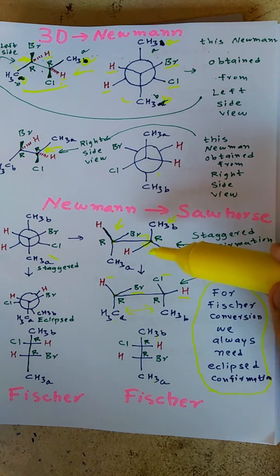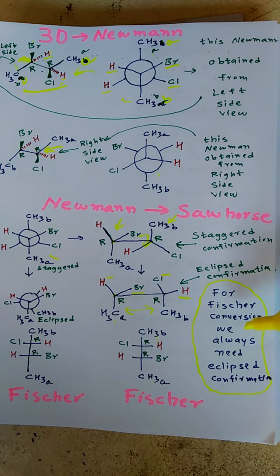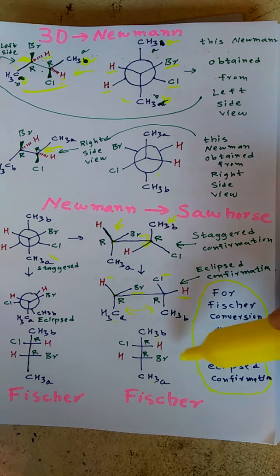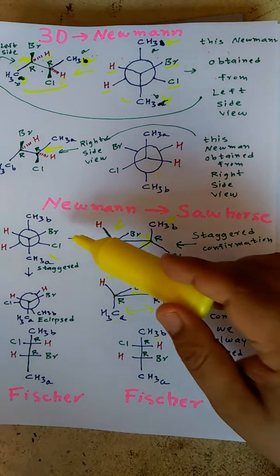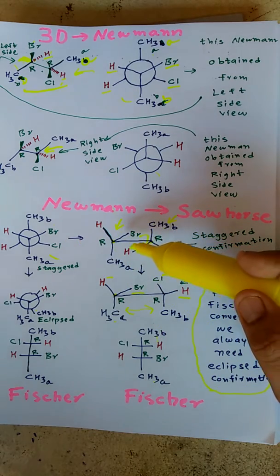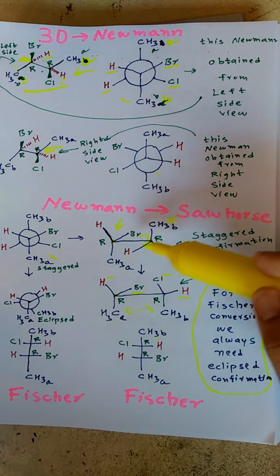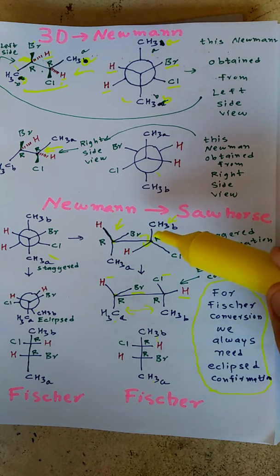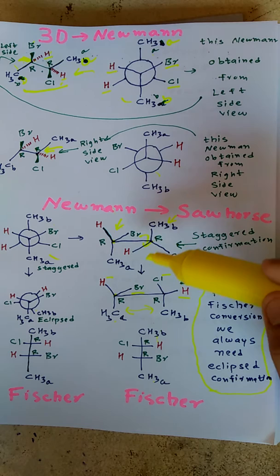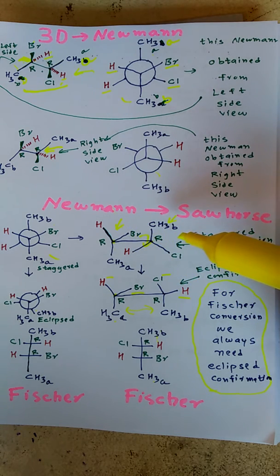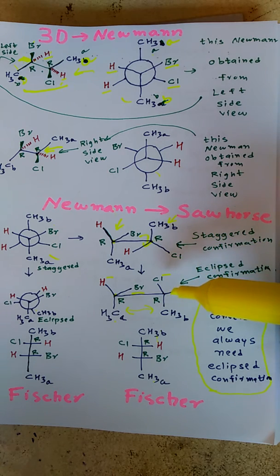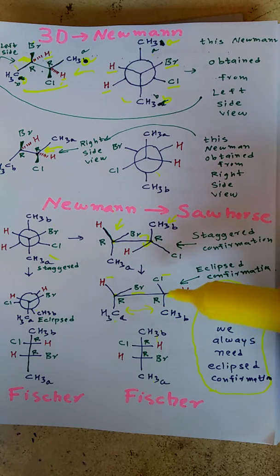To draw the Fischer projection formula, we must always consider the eclipsed conformation first, then convert into Fischer form. So for the Fischer form we need to convert into the eclipsed conformation, whether it is Sawhorse or Newman. To get the eclipsed conformation, we make methyl and methyl 0 degrees dihedral angle. I have rotated 180 degrees, so methyl comes here, chlorine goes 180 degrees away, and hydrogen goes 180 degrees.